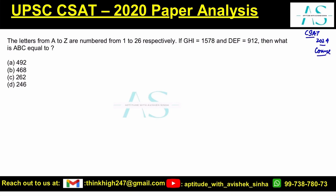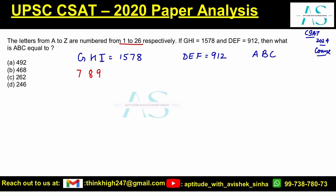Let's solve it. G, H, and I is coded as 1578. D, E, F is coded as 912. We are supposed to find the value for A, B, C. Since letters are ranked 1 to 26, let's write their ranks: G is 7, H is 8, and I is 9, so we have 7, 8, 9.